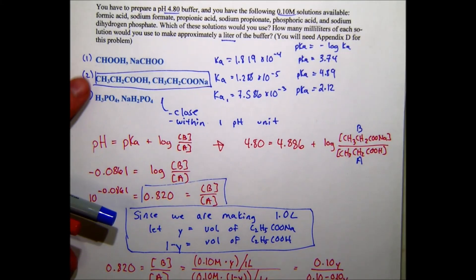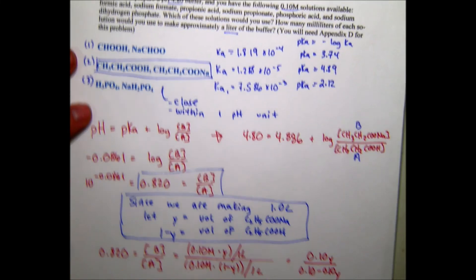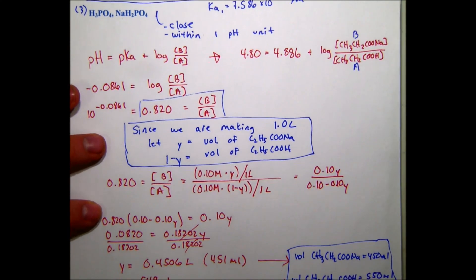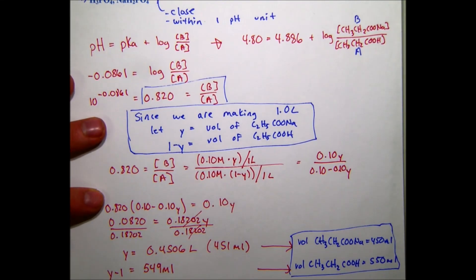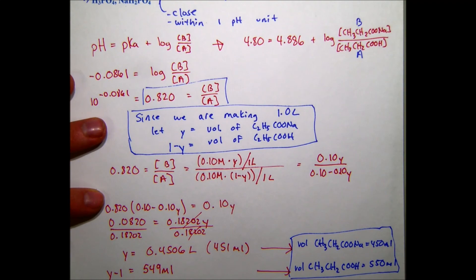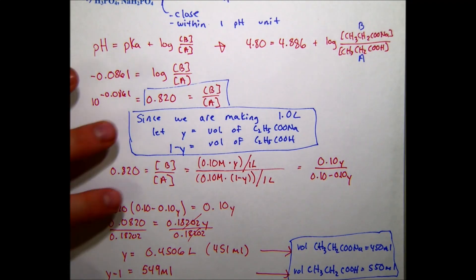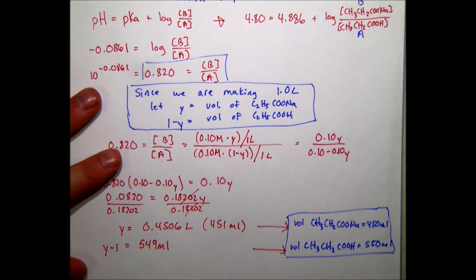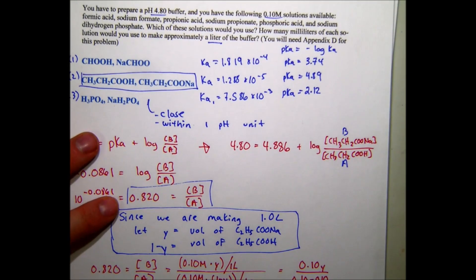We now know how to pick which is the best pair for our buffer. We hopefully also now know how to figure out what volume of known concentration solutions we have to mix together to get the right pH as well as not exceeding the volume constraint. We hope this helps.